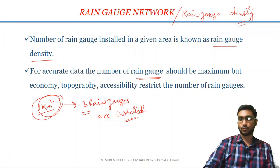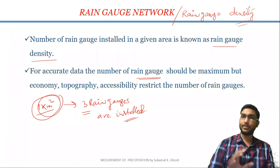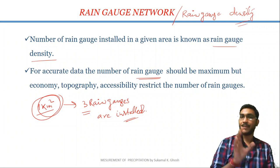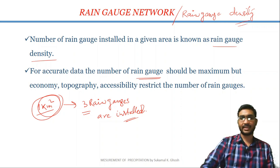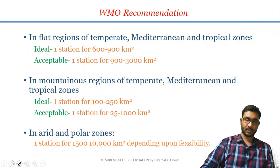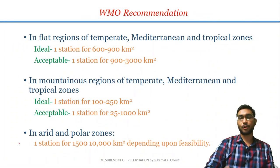To get accurate data of rainfall, the rain gauge density should be maximum. But due to various reasons like economy, topography, or accessibility, the number of rain gauges is minimum. WMO — the World Meteorological Organization — has some recommendations about rain gauge density.